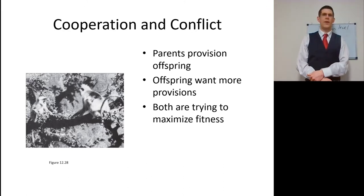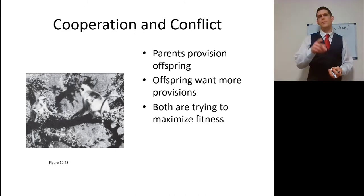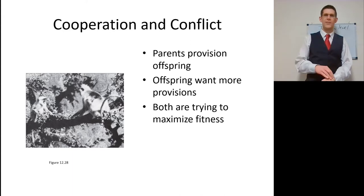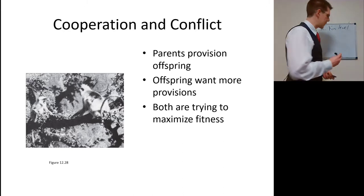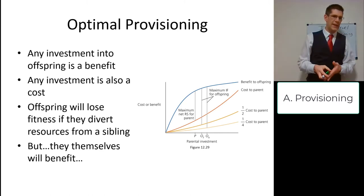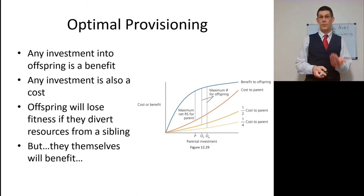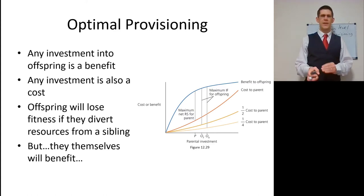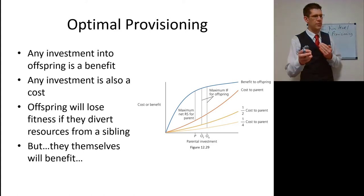The parents do want to provision their offspring. Any investment into an offspring is a benefit for the offspring, but also a cost to the parent — so it's a fitness benefit to the parent to provision an offspring. But what about a second offspring? The offspring loses fitness if they divert resources from a sibling — they don't gain as much. But they gain a little bit, so there's really a balance here. We're both trying to maximize our fitness.